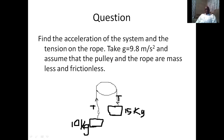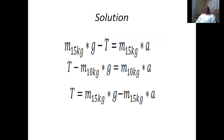On this system, we assume the rope is inextensible, meaning the rope cannot extend, so the 15 kg mass and the 10 kg mass will accelerate at the same rate. We assume that the 15 kg mass will be going down and the 10 kg mass will be going up. For the 15 kg mass going down, the weight of that mass will be greater than the tension in the string.